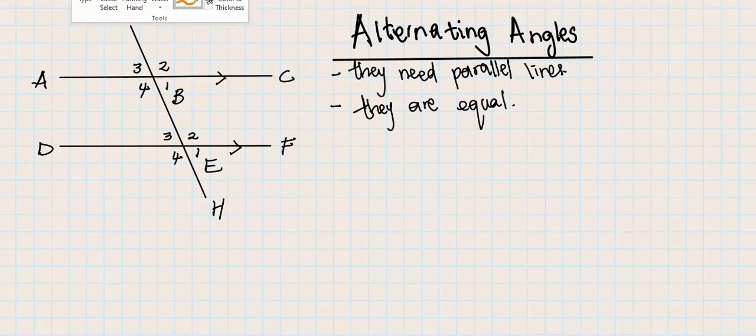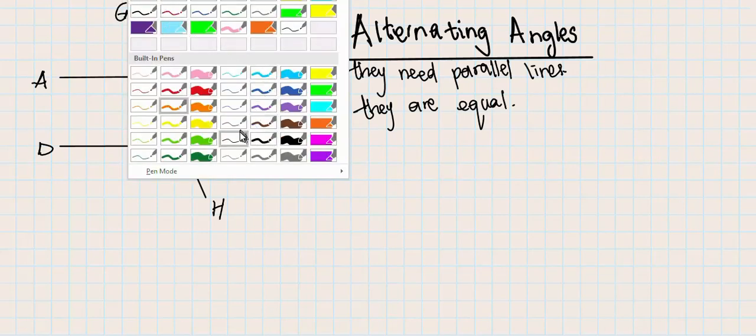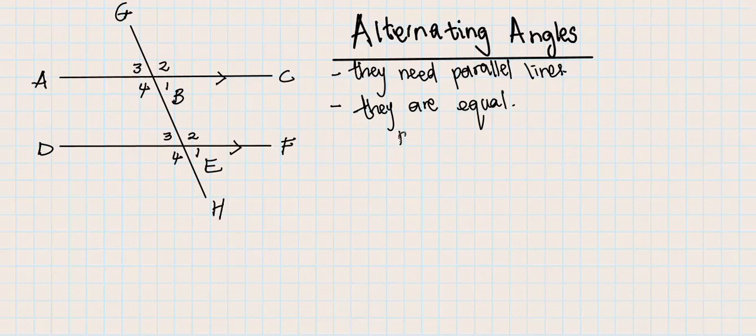In this shape, angle b1 is equal to angle e4 by what reason? Alternating angles. Which parallel lines are they using? They are using this parallel line AC, which is parallel to DF. Remember, you mention the whole line.